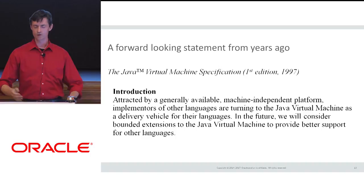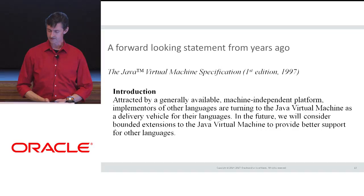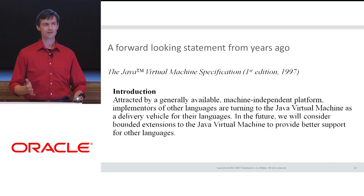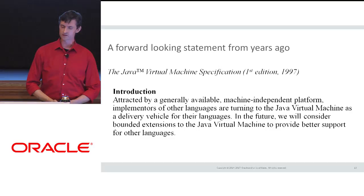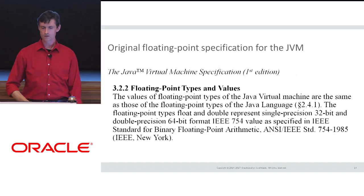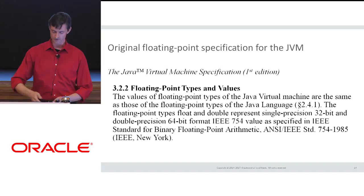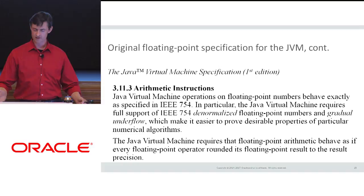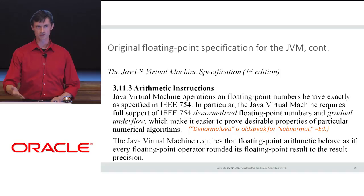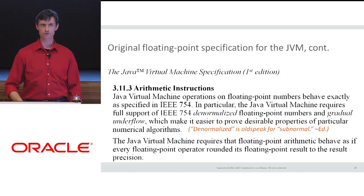A quote from the introduction of the virtual machine specification notes that even back in 1997 multiple language implementers were targeting the VM. The original VM specification also covered floating-point: for the floating-point types you have to use exactly the IEEE types — float and double, 32 and 64-bit — and for the operations on those types you have to do what IEEE requires, including supporting the subnormal values. This allows a pretty direct mapping from language to VM to hardware instruction.